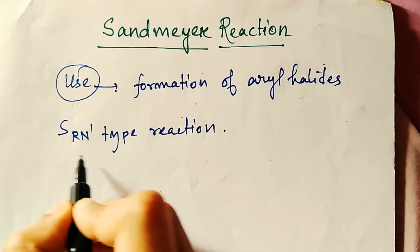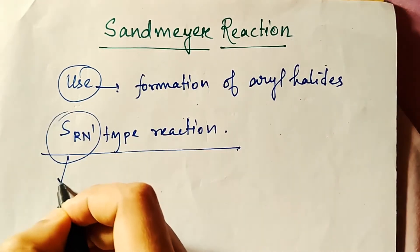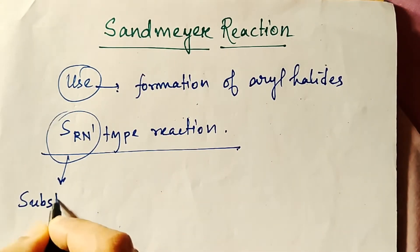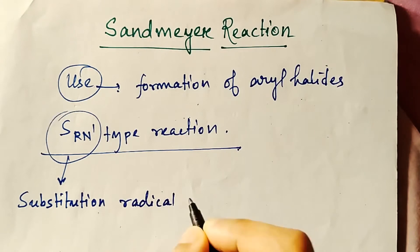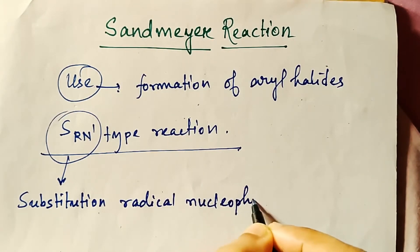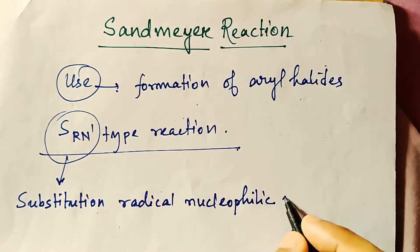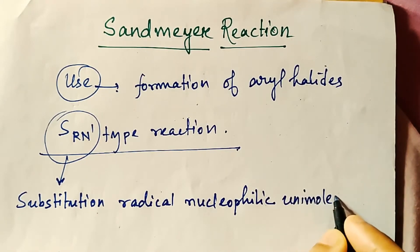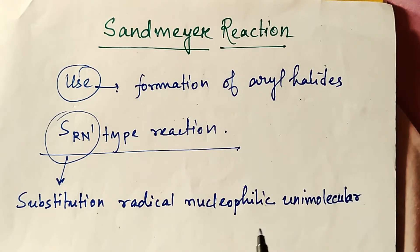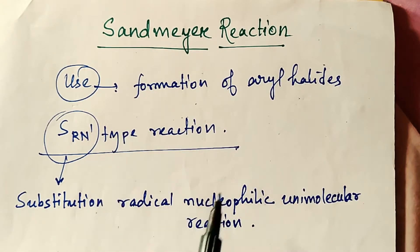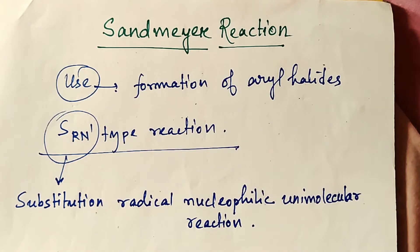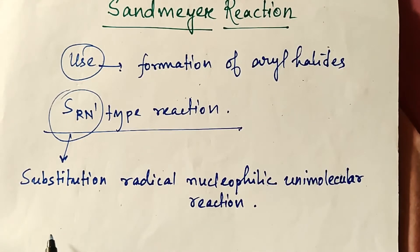SRN1 stands for Substitution Radical Nucleophilic Unimolecular reaction. In this reaction process, a radical will act as an intermediate, and the nucleophile will also substitute. The radical part acts as an intermediate in this reaction.